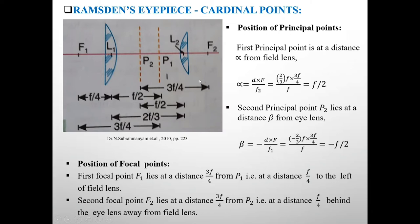First principal point lies at a distance alpha from field lens. Alpha is D into EF upon F2. D means distance between these two lenses is 2F by 3, and this EF is 3F by 4 upon F2 is EF, so it is F by 2. This means first principal point P1 lies at a distance F by 2 from the field lens. See here, this P1 point lies at a distance F by 2 from this lens.